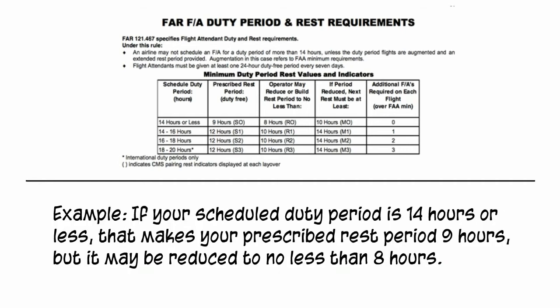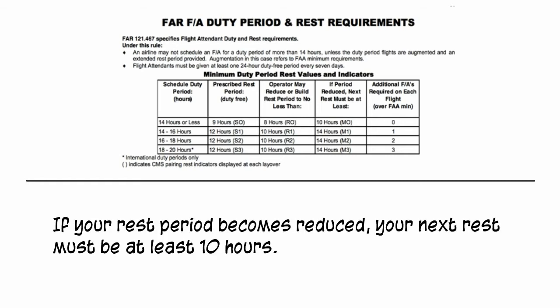For example, if your scheduled duty period is 14 hours or less, that makes your prescribed rest period 9 hours, but it may be reduced to no less than 8 hours. If your rest period becomes reduced, your next rest period must be at least 10 hours.